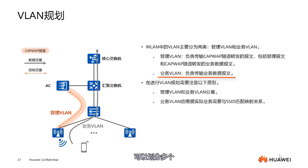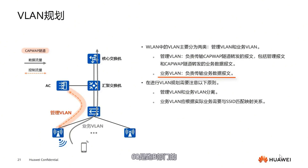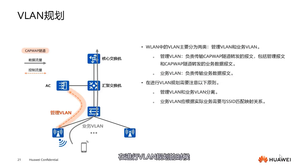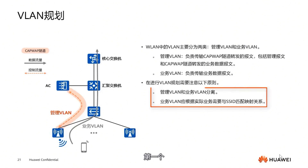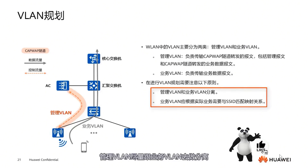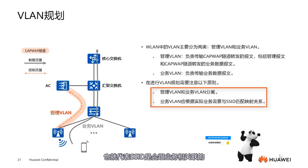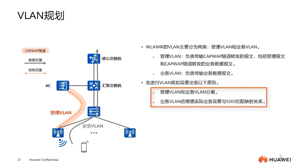Service VLAN isn't just one — it can be divided into multiple VLANs, such as VLAN 20, 60, and 80. Maybe 20 is for Department A, 60 is for Department B, and 80 is for Department C. We can also base divisions on the nature of the business or employee levels. When dividing VLANs, first try to separate the Management VLAN from the Service VLAN, then based on actual business needs, bind SSIDs. This means SSIDs will be associated with specific services.